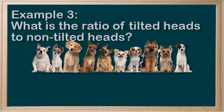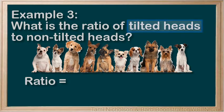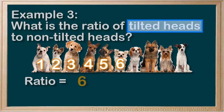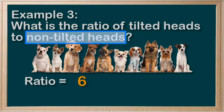Let's consider our dogs again, but this time we'll look at the ratio of tilted heads to non-tilted heads. The tilted heads are listed first, so let's count them: 1, 2, 3, 4, 5, 6. Six dogs have tilted heads. Non-tilted heads: 1, 2, 3, 4. So we list the 4 and put a colon in between — 6 to 4.